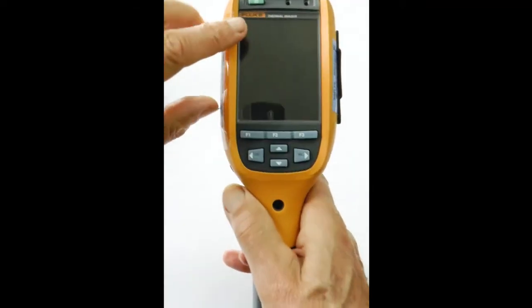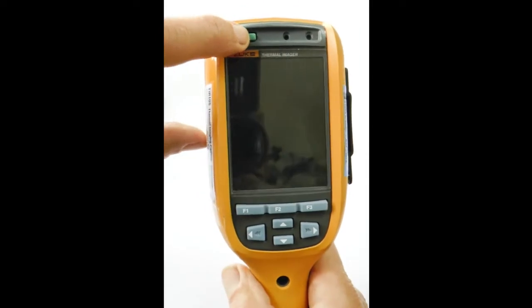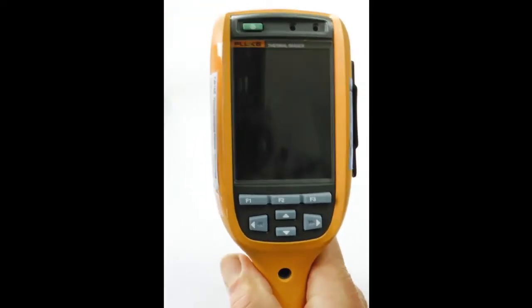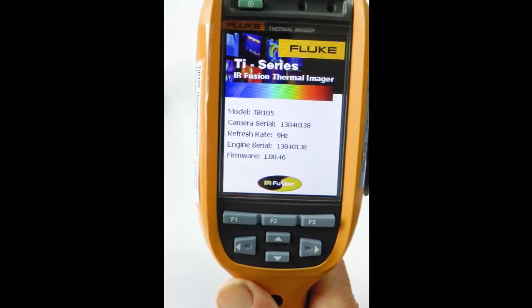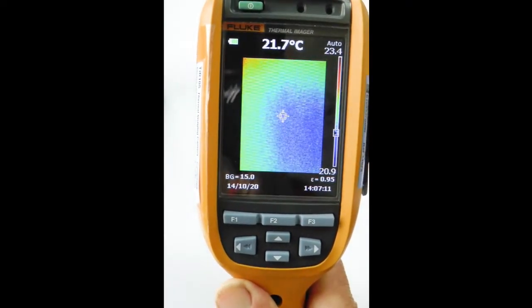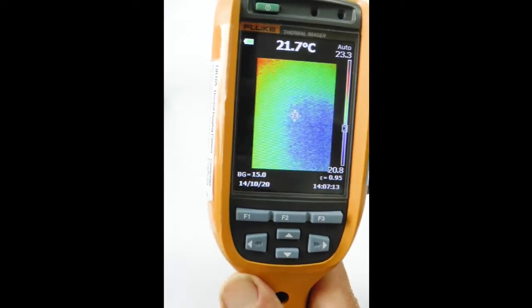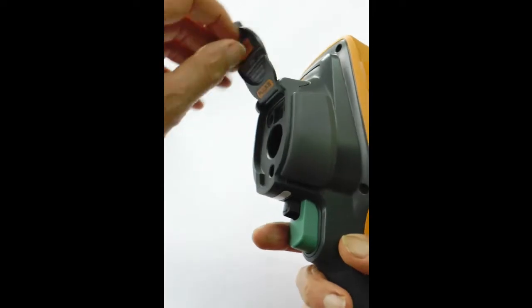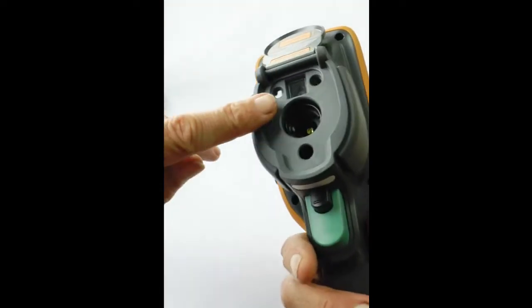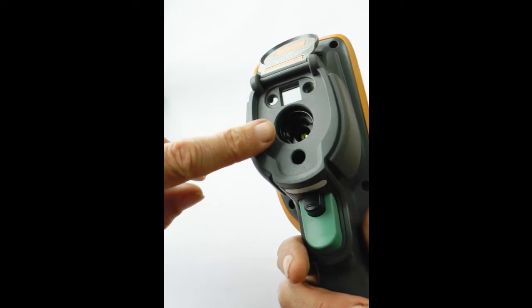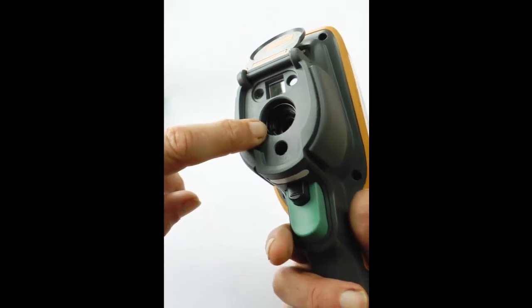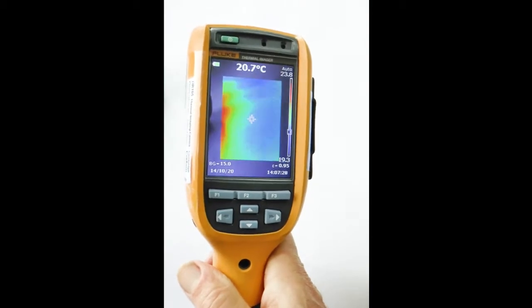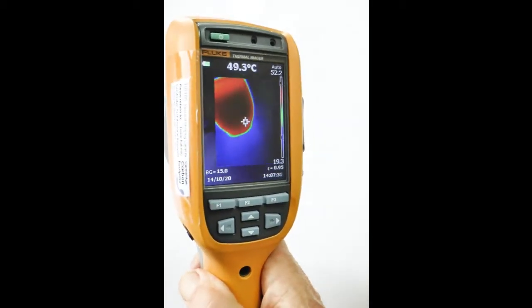You turn on the TIR-105 by pressing and holding this power button until it beeps and then you get this start screen. After a bit this is the thermal image but it's just noise because first we have to open the lens cap. This is the visible camera, this is the infrared thermal imaging camera and now you'll see here is my cup of tea.